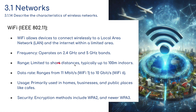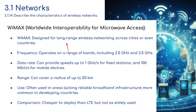Wi-Fi range is limited to short distances, typically up to 100 meters indoors. Speeds range from 11 megabits per second for Wi-Fi 1 up to 10 gigabits per second for Wi-Fi 6. It's primarily used in homes, businesses, and public places like cafes. Encryption methods include WPA2 and the newer WPA3.